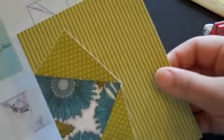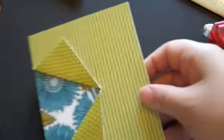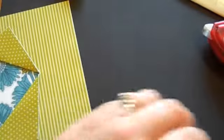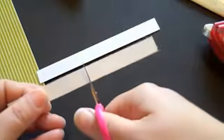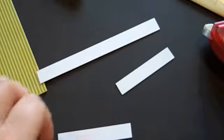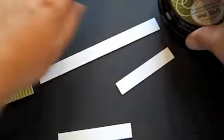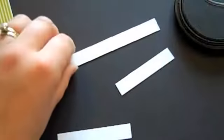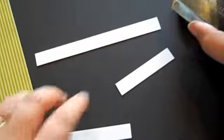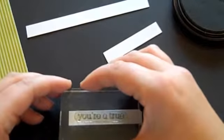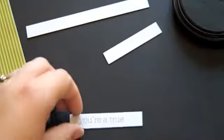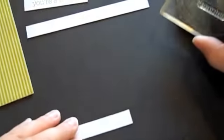If you look back at the sketch here, it shows that the sentiment goes right there. So I decided to put together some of the sentiments that are in Friends Till the End on separate little strips of paper. These are about a half an inch. I've got two smaller phrases that I'm going to stamp in Ripe Avocado, the first of which is You're True.